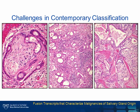Challenges in salivary gland pathology are rooted in the dramatic histomorphologic overlap within and between benign and malignant tumors. Although our understanding of the morphologic and immunophenotypic nuances of salivary gland neoplasia has improved over the years, even expert head and neck pathologists continue to struggle with a subset of cases using conventional surgical pathology techniques — that is, histomorphology, histochemistry, and immunohistochemistry.